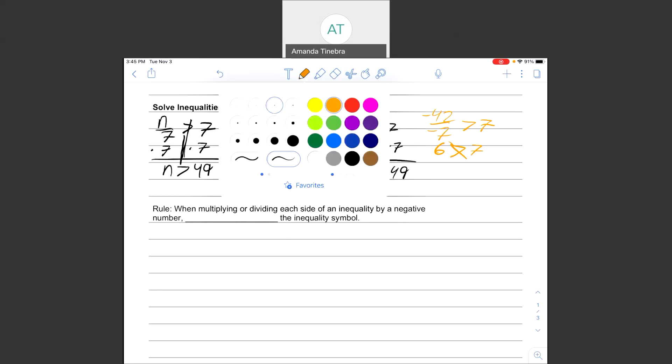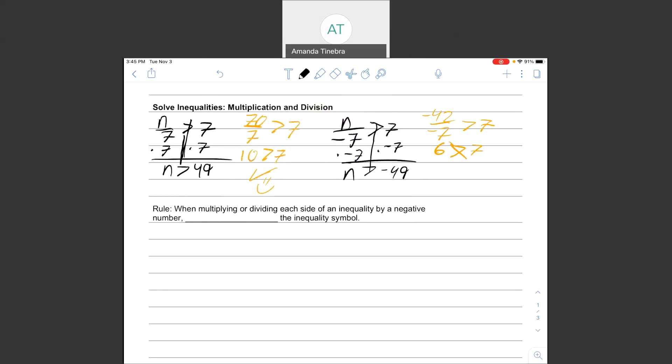Any time that we are multiplying or dividing each side of an inequality by a negative number, we have to flip the inequality symbol.